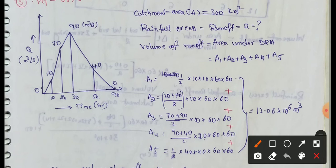Third area: 70 to 90. This is 70 plus 90 into 10, time difference from 20 to 30 is 10, into 60 into 60. Fourth ordinate is 90 plus 40 by 2 into time difference from 30 to 50, which is 20, into 60 into 60.